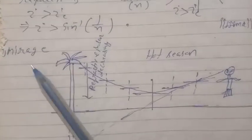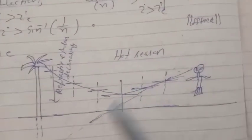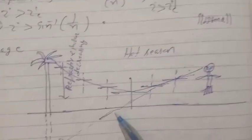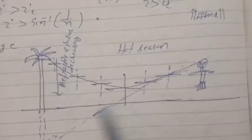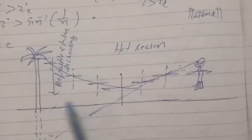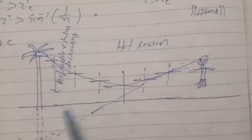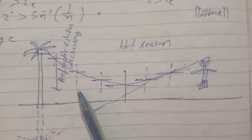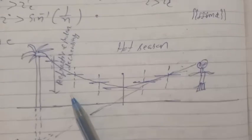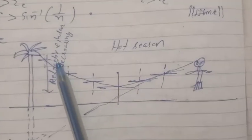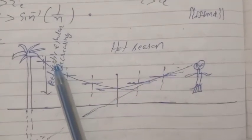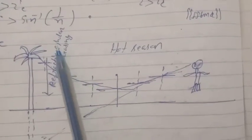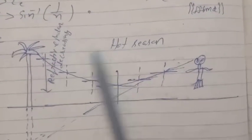Now let's explain some phenomena related to total internal reflection. The first one is mirage. During the hot season in the desert region, the air near the earth's surface becomes very hot and so it becomes rarer, and as we go upward, the medium becomes denser — that is, the air becomes denser.